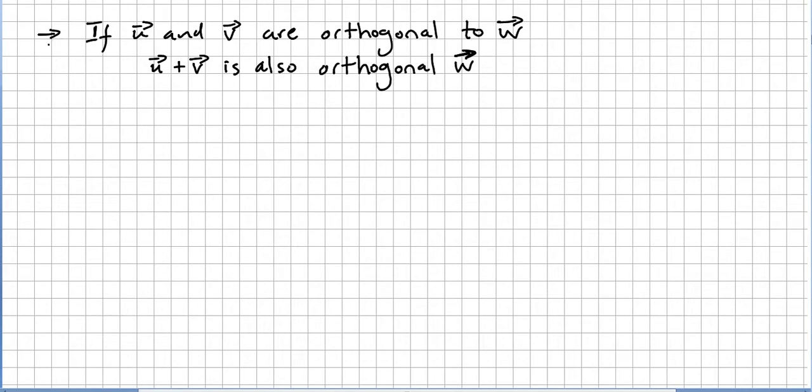One of them is this one. If a vector u and vector v are orthogonal to w, u plus v is also orthogonal to w. So we have a vector u and that vector is also orthogonal to w. We have a vector v, that vector is also orthogonal to w. So we say that u plus v is also orthogonal to w. It's very easy to prove that.